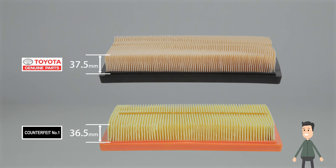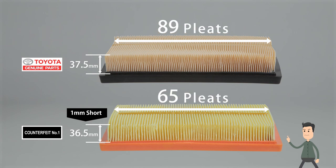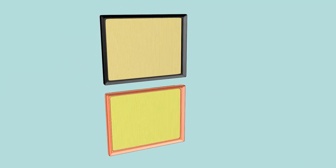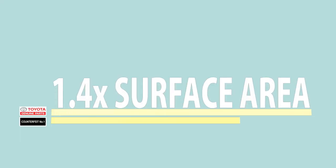When we look closely at the counterfeit air filter, it's shorter by one millimeter and even has less pleats. The genuine filter also has 1.4 times the surface area to filter dust, so it would take longer for it to clog up.